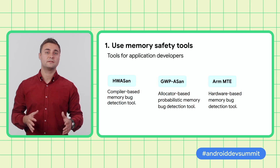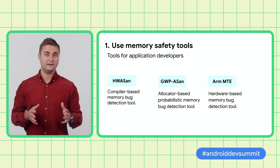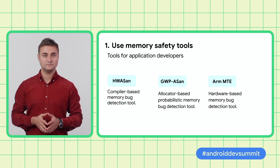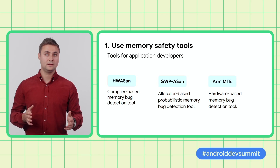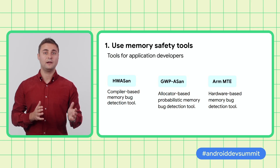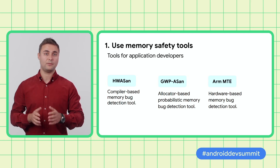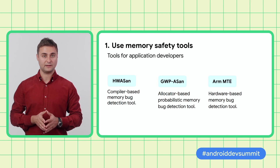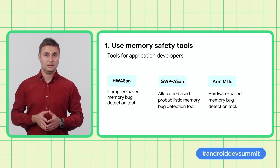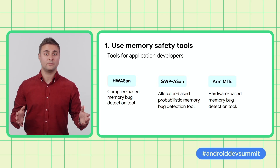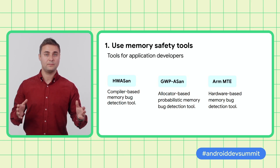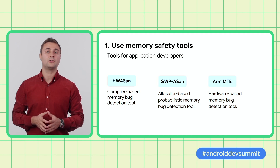The journey to memory safety starts by using our tools. Over the years, we introduced new tools and enhanced existing ones. Today, developers can use Hardware ASAN, a compiler-based memory bug detection tool, and GWP-ASAN, an allocator-based probabilistic memory detection tool. These were introduced in Android 10 and Android 11 respectively. In the future, with the introduction of new hardware, developers will be able to use ARM MTE, a hardware-based memory bug detection tool that we have been co-developing in collaboration with ARM.